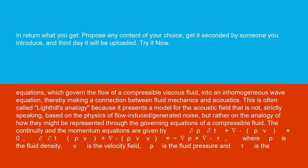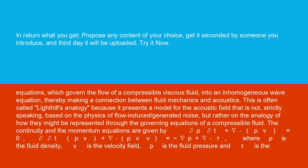where ρ is the fluid density, v is the velocity field, p is the fluid pressure, and τ is the viscous stress tensor.